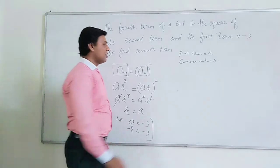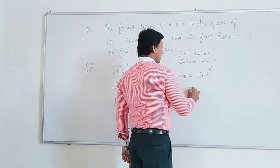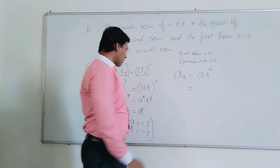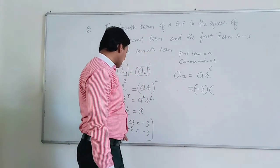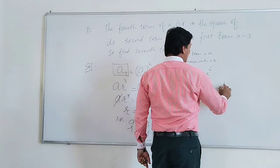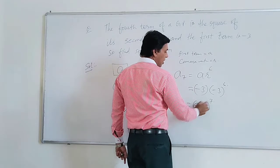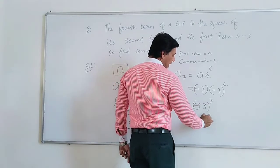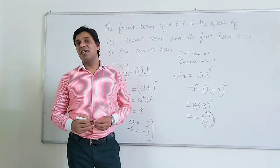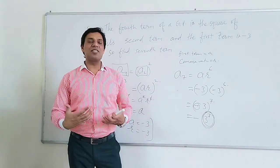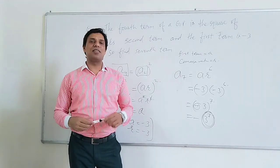Now we have A and R, so we can calculate the seventh term: A7 = A·R⁶. The value of A is −3 and R is also −3, so A7 = (−3)·(−3)⁶ = (−3)⁷. Since a negative number to an odd power is negative, the answer is −3⁷. You can simplify and get the answer. For more topics and interesting videos, keep watching and subscribe to my channel. Thank you very much.